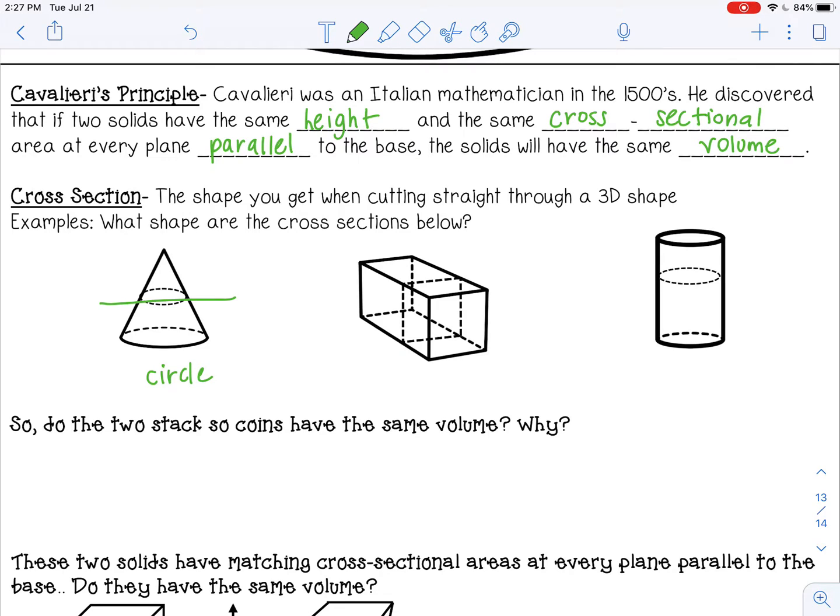All right, same thing for this prism. So it looks like this is a square. So if we cut this prism in the middle, then both sides or both faces where we have cut would be a square.